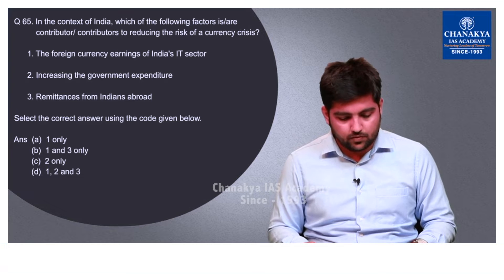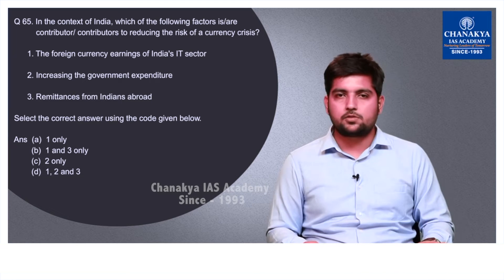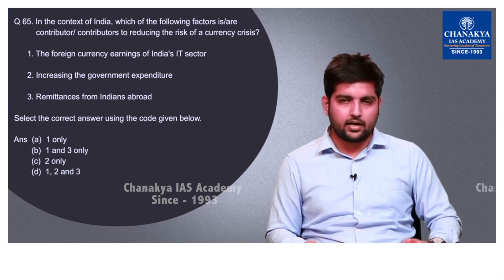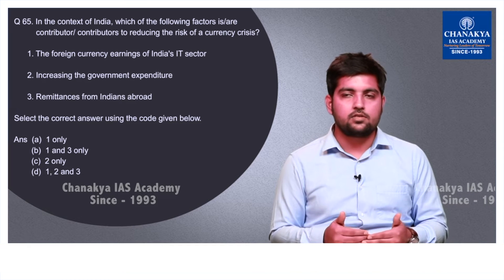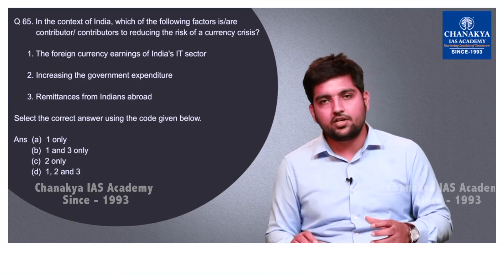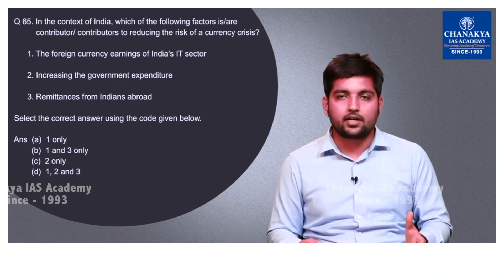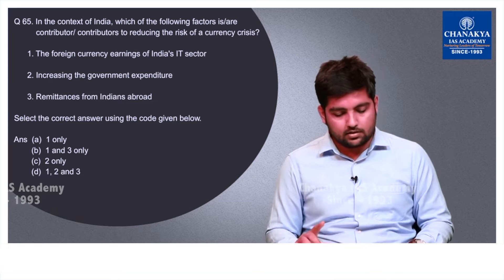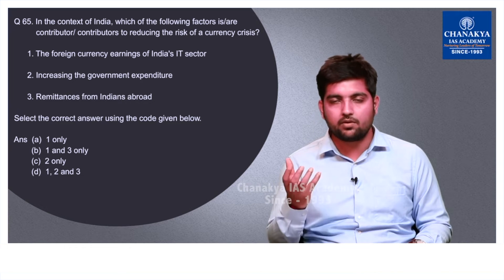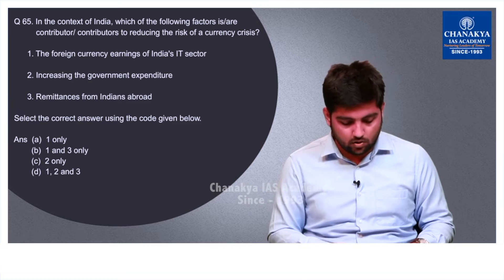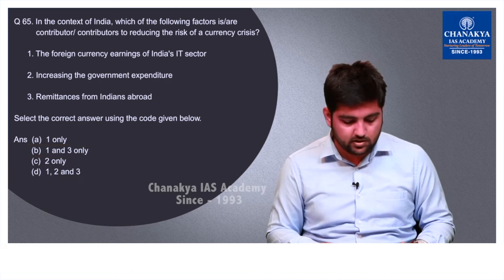Question number 65 asks about factors that reduce the risk of a currency crisis in India. The first statement — foreign currency earnings of India's IT sector — is correct, as it acts as a hedge when the rupee loses value. The second statement — increasing government expenditure — is wrong, as it infuses more rupees into the market, which is counterproductive. The third statement — remittances from Indians abroad — is correct as it brings forex into India. So statements 1 and 3 are correct and the correct option is B.